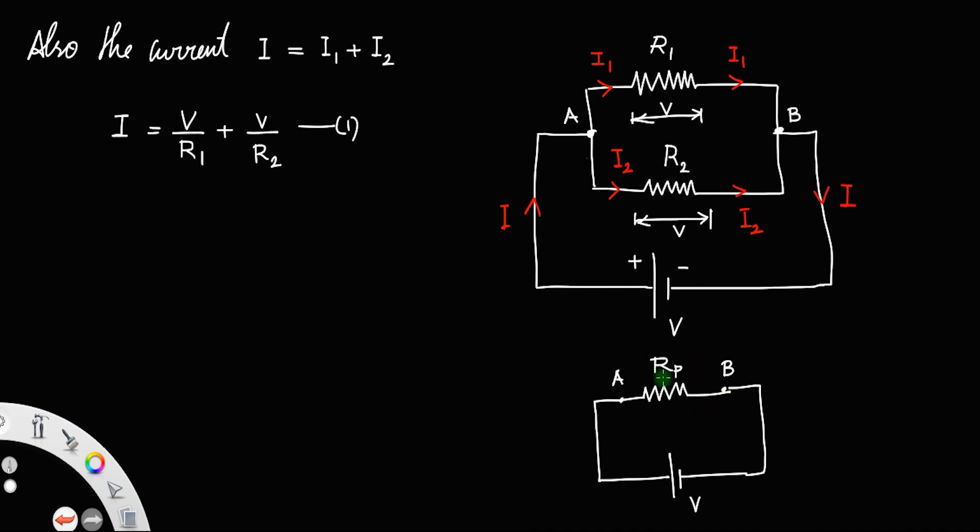What this Rp is doing is, the Rp will give the same effect as that of R1 and R2 combined. Clearly, the current here at point A will be I.